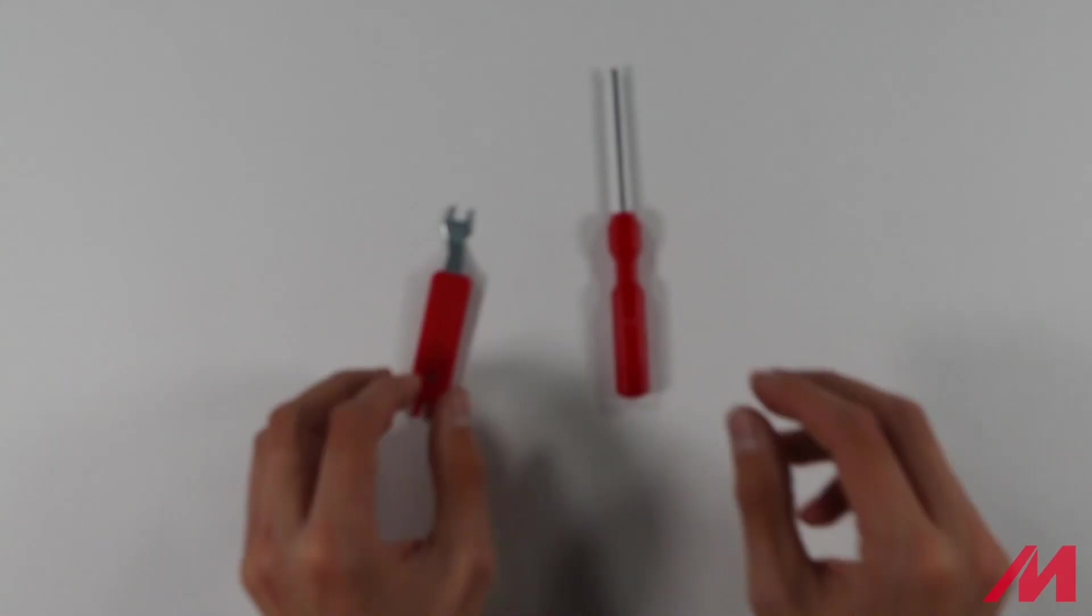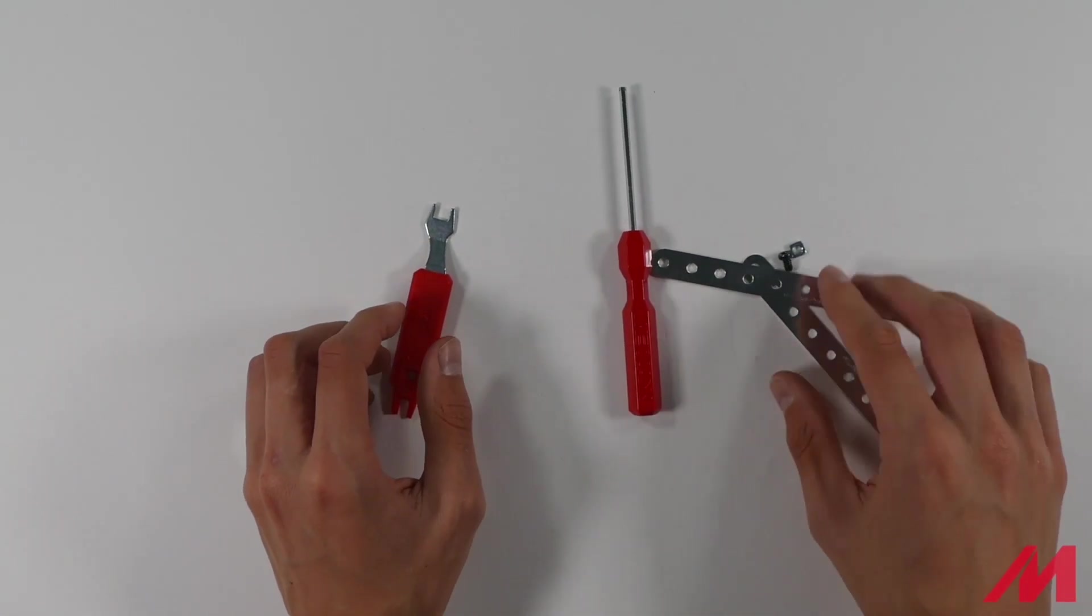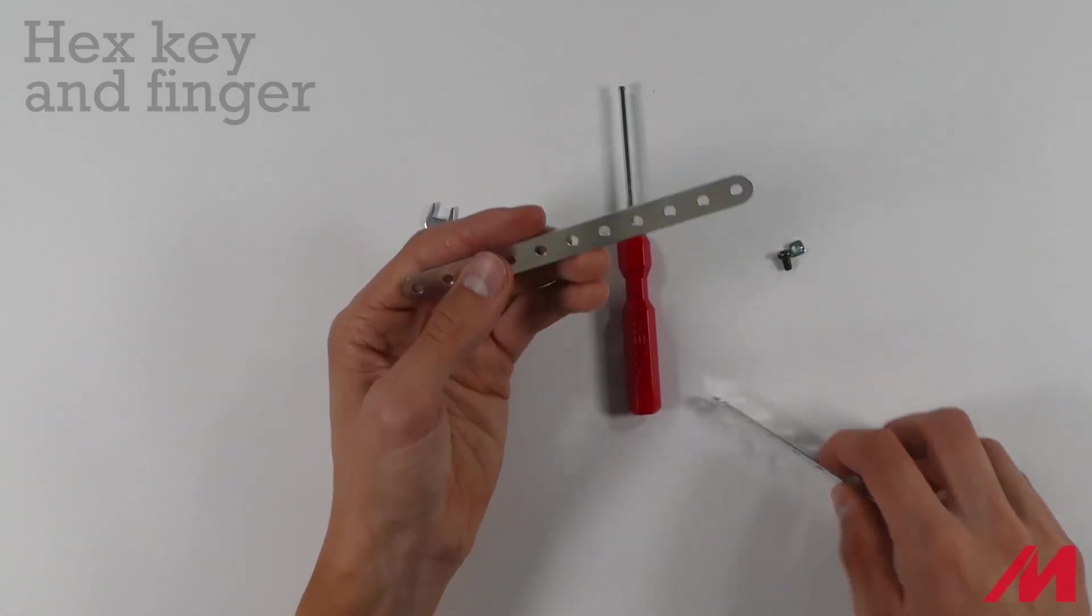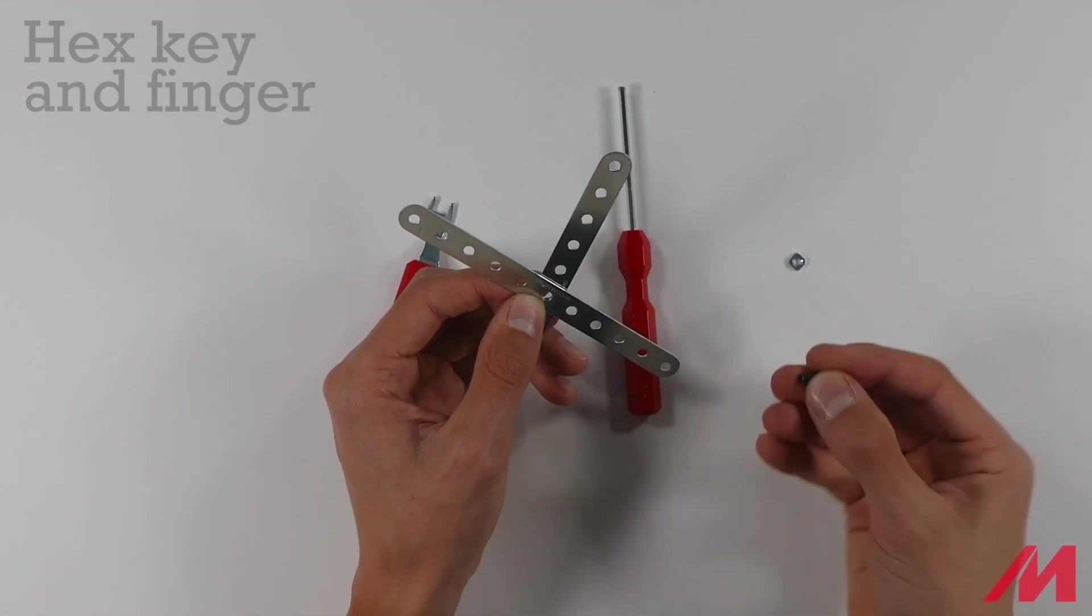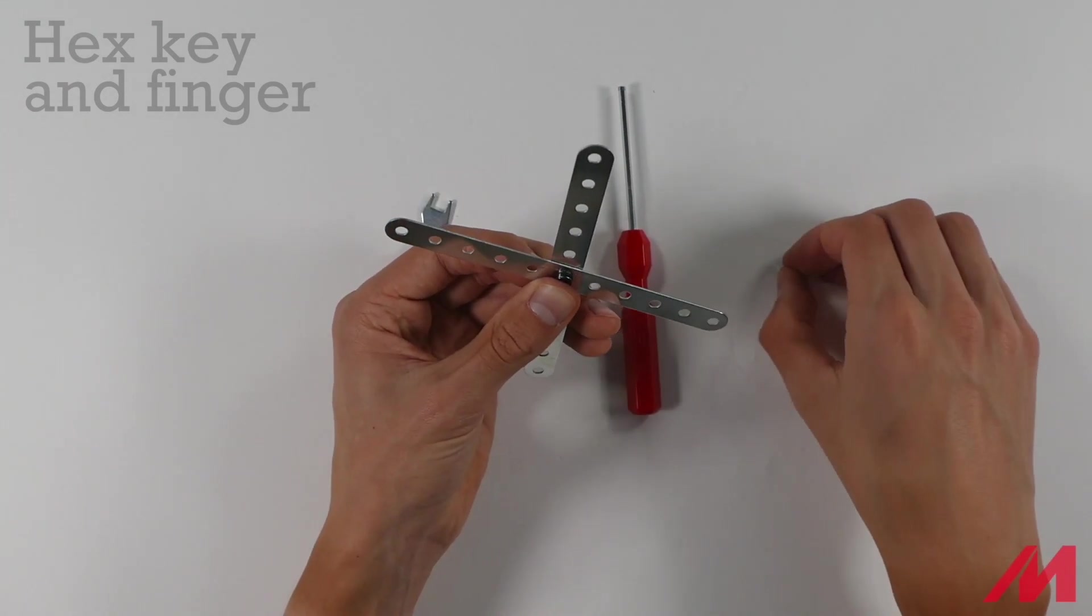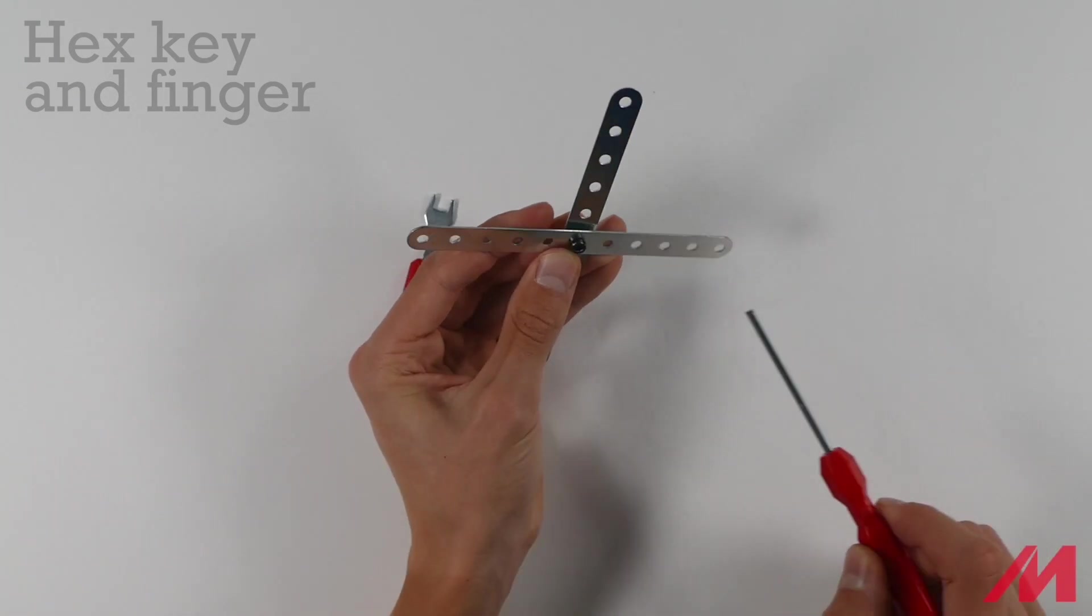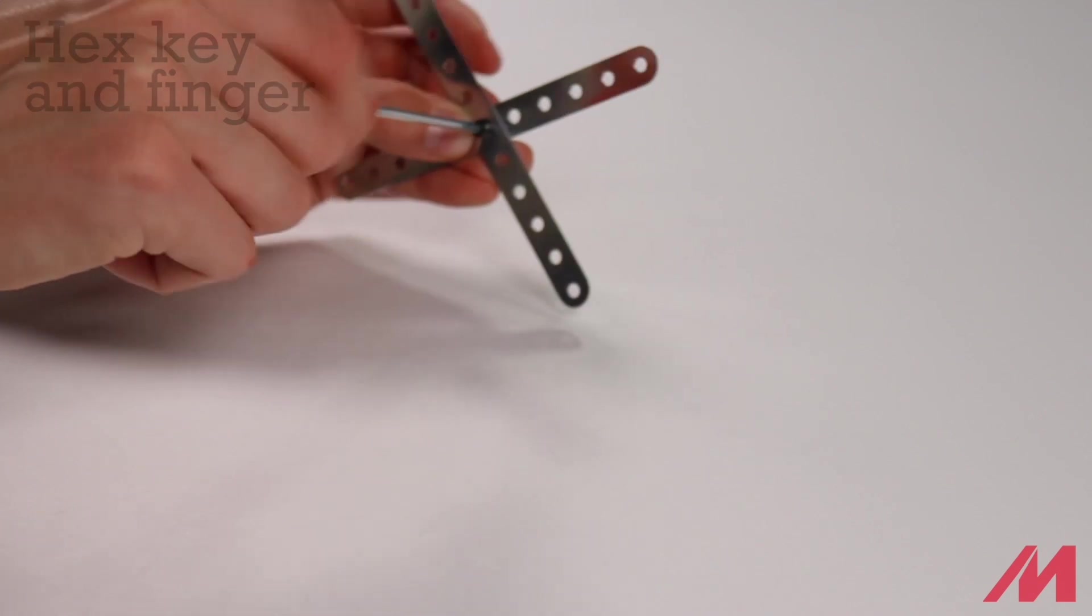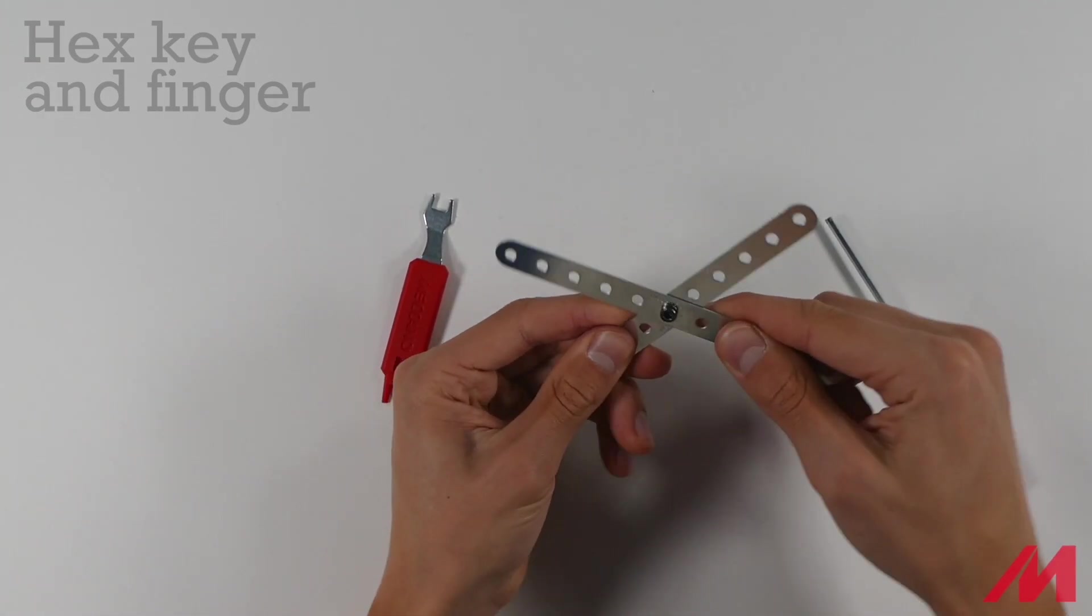I hope you're ready because I have a couple tips coming your way. The easiest way to put two pieces of Meccano together is like this. Take the screw, you put it through the two pieces and you hold the nut on the other side. Whilst you hold the nut, you turn the hex key round. Now this is great, but it's not tight.